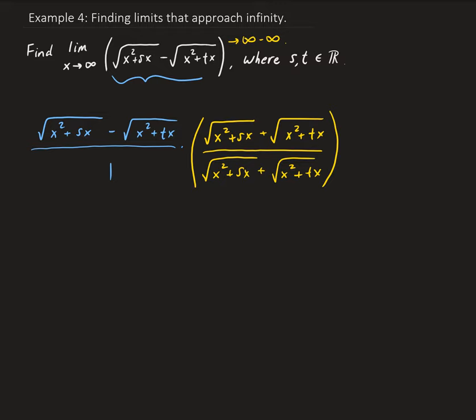Using this property where we have a minus b times a plus b equals a squared minus b squared, we can apply that here, where a is the square root of x squared plus sx, and b is the square root of x squared plus tx.